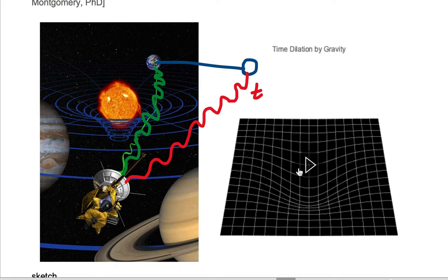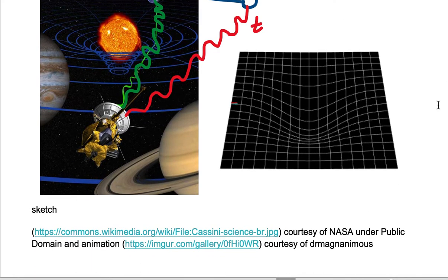Let's take a look at this animation. On the right, we're looking at two waves being sent. The red wave is going to travel unimpeded by a large massive gravitational object such as the sun.